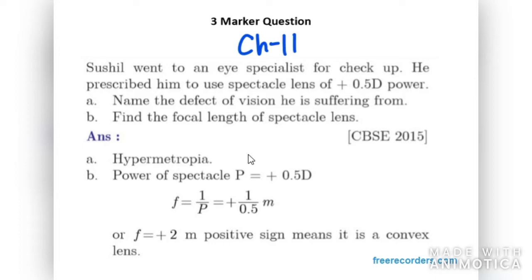Therefore, he needs to use a convex lens for it. In the second part, we need to find the focal length. Focal length is 1 over P, so 1 over 0.5 is positive 2. That means the focal length of the lens is positive 2 meters. Thus he needs to correct his defect by convex lens.